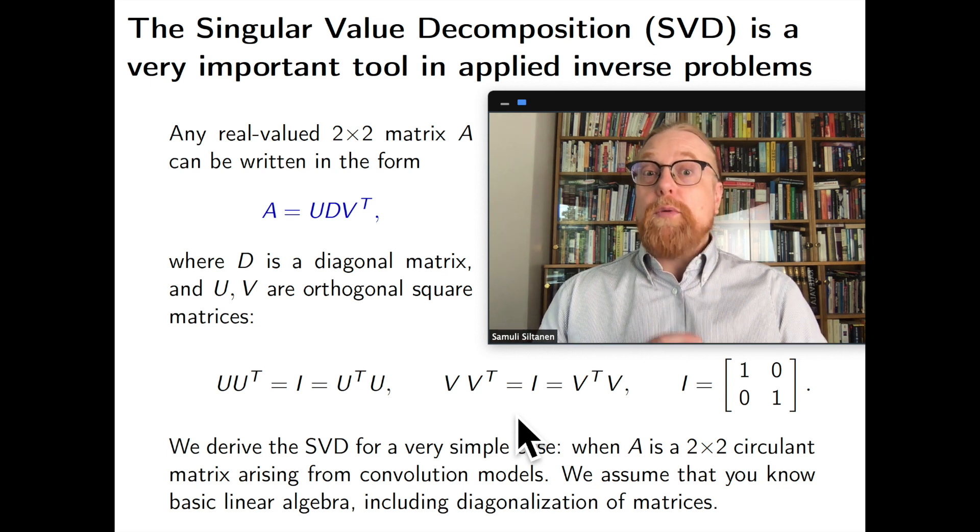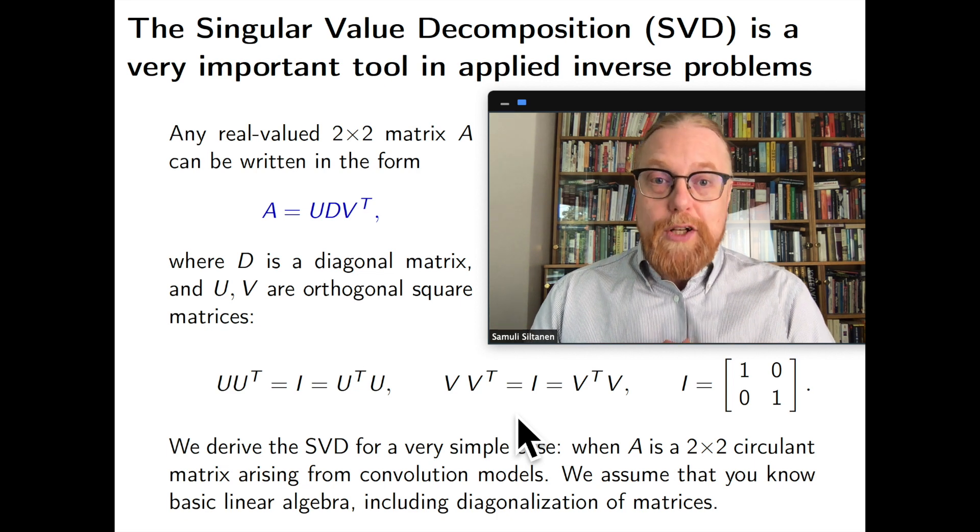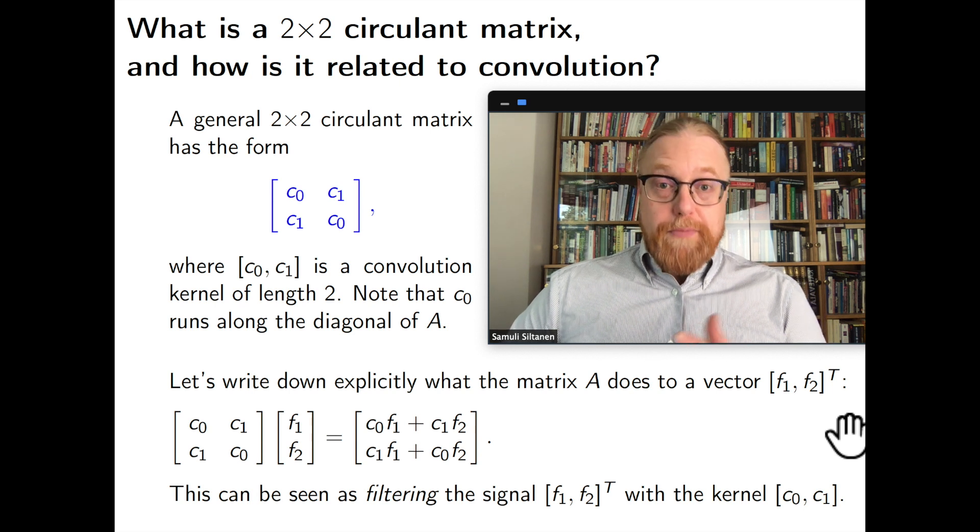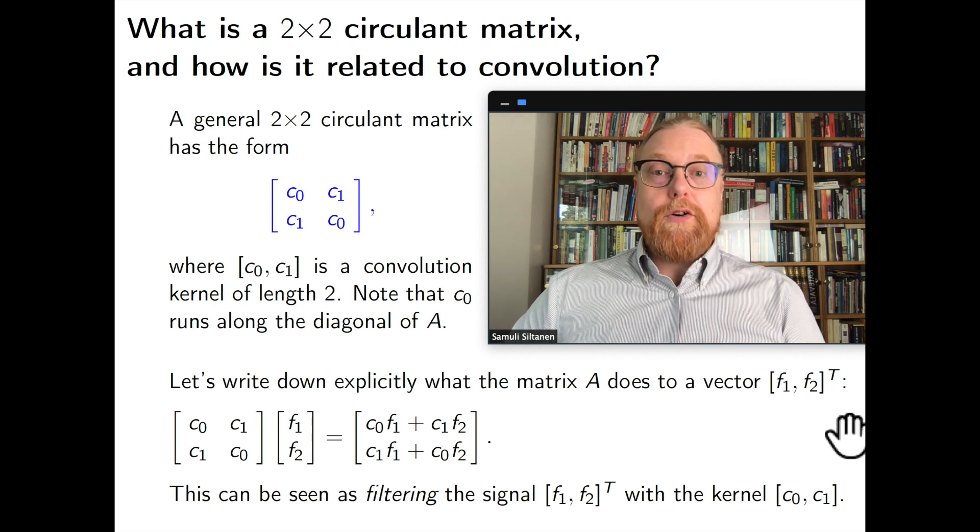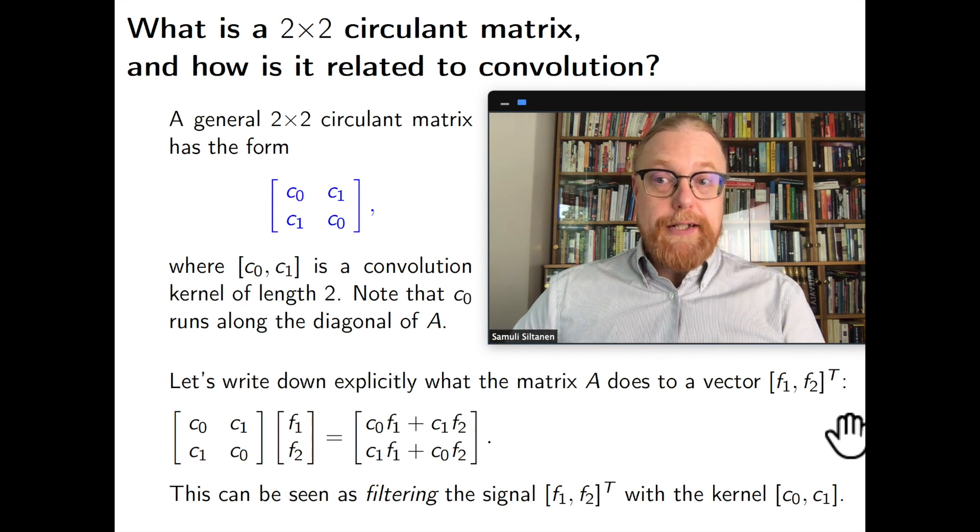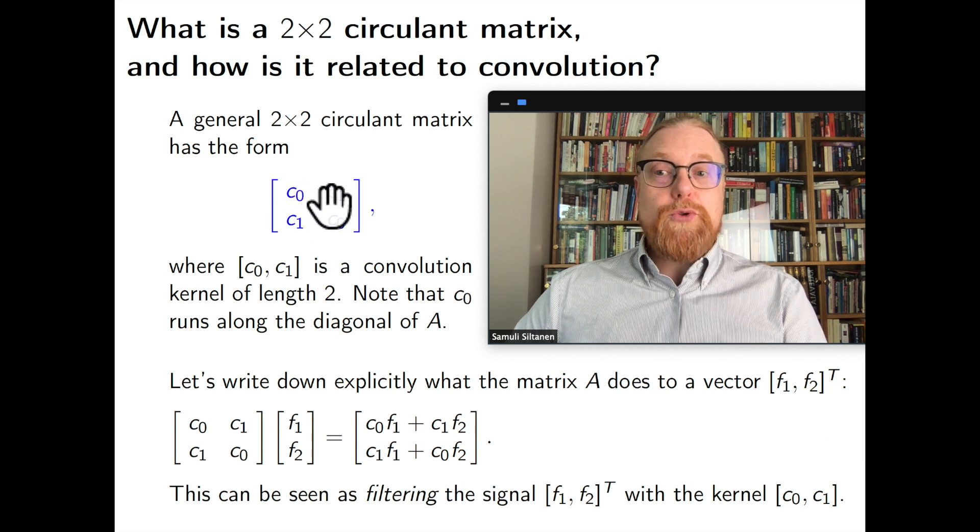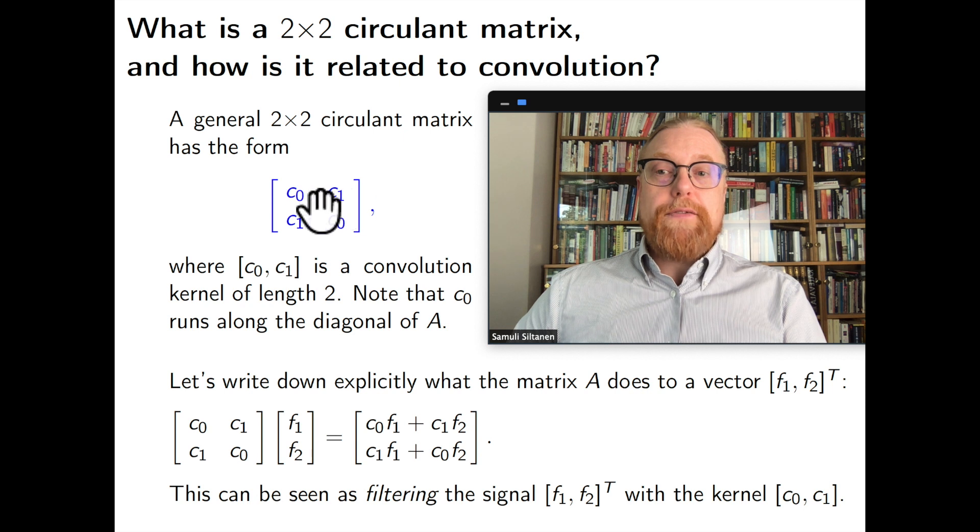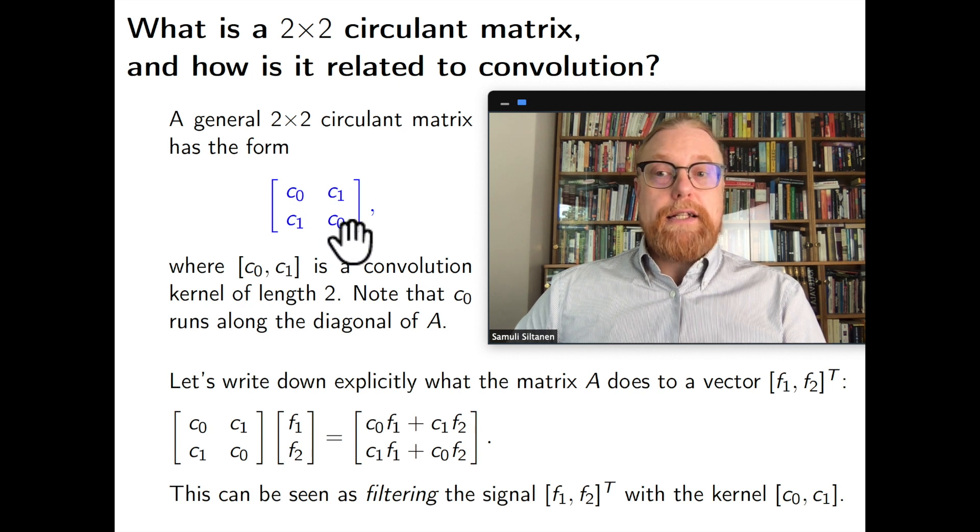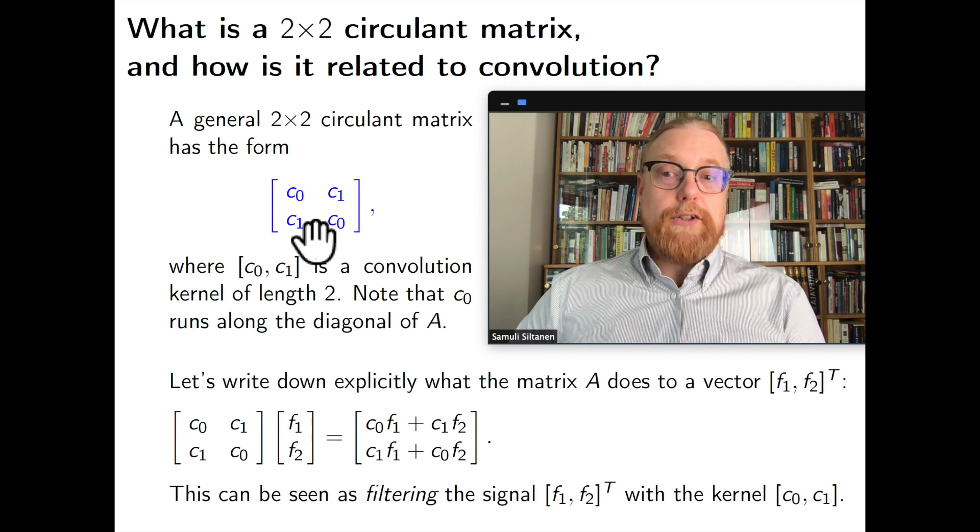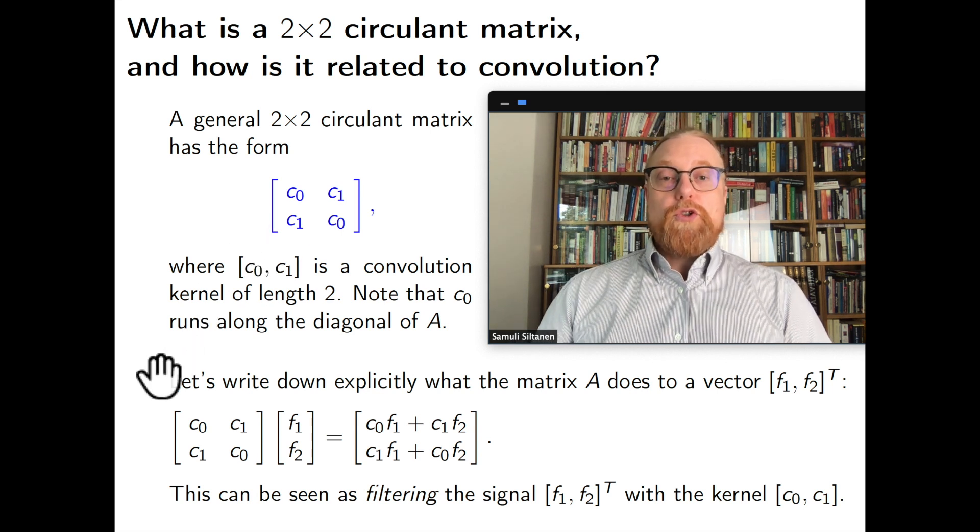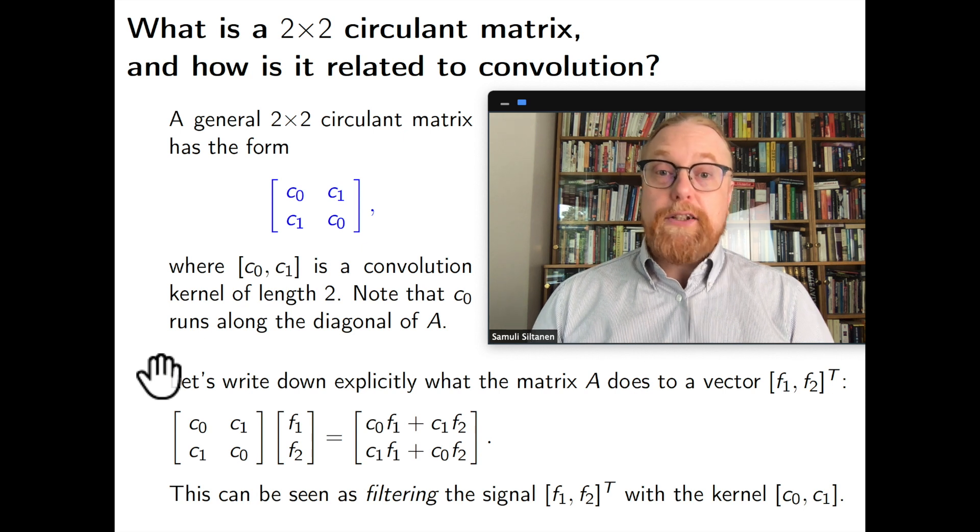In this talk we will restrict to two by two matrices A that are circulant. Circulant matrices have the same thing repeating on every row but shifted. So you see here the first row is C0 and C1. In the second row we shift this thing one step further so C0 is here and C1 is actually then flipped to the other side.